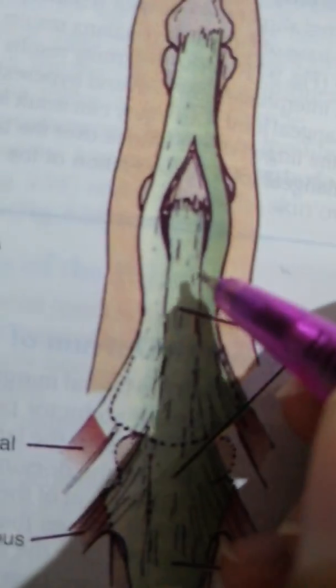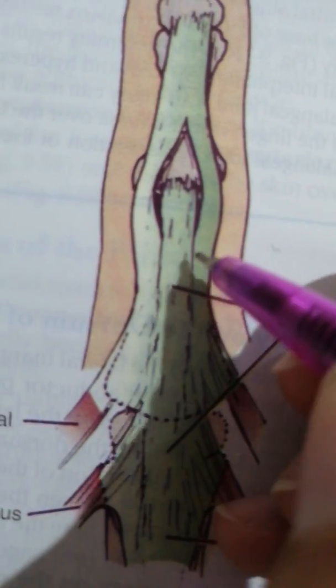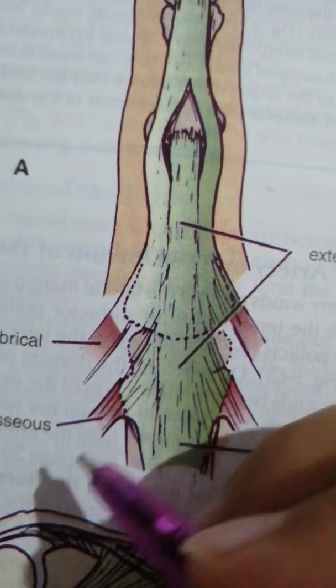Now at the level of the first or the proximal interphalangeal joint, which is kind of about this level, the extensor expansion, which was previously just a triangular aponeurosis, it divides into or trifurcates into a central slab and two lateral slabs. But first of all, let's talk in this region.